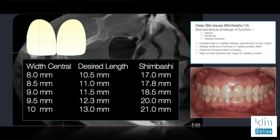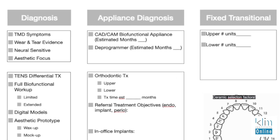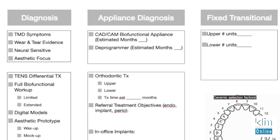So when considering and having that conversation with a patient about comprehensive care, you can see there are a lot of issues that can be present. It can be TMD issues in combination with excessive wear, neural sensitivities, and an aesthetic focus — or it may be just a few of those objectives the patient is looking for. Regardless, we want to work a patient through a systematic workup to make sure we know where we're going to go.